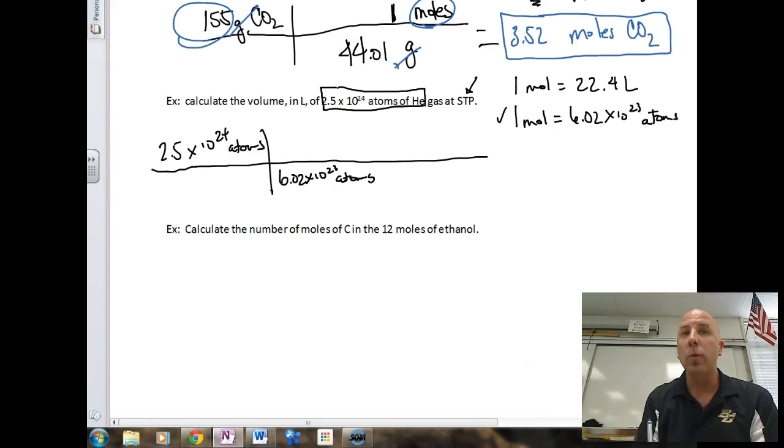Let's use unit factor method to incorporate in both of these equalities to get the correct answer. We're going to start off with 2.5 times 10 to the 24th atoms. We're going to start off with this second equality and we're going to put 6.02 times 10 to the 23rd atoms as the denominator so that those two values cancel, and we're going to put the equality one mole on top. Then we're going to go to our second equality, and we're going to put one mole on bottom, and we're going to put the 22.4 liters on top. It's a two-step mole problem.